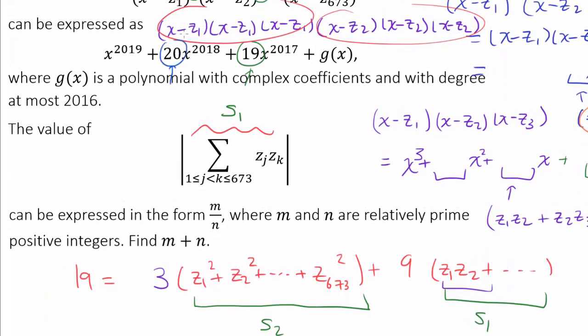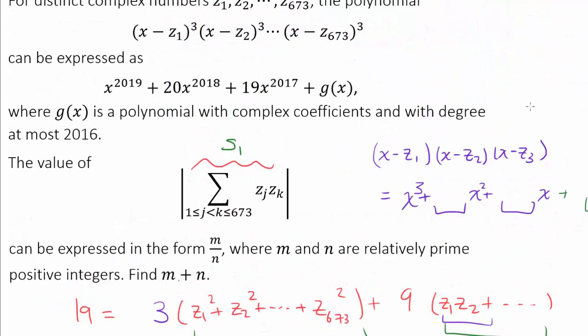So now that we understand 19, let's go to 20. What does 20 stand for? Well, as we can see from this example, the coefficient of the second highest degree term is going to be, so this part, is going to be negative z1 plus z2 plus z3. Because to get x squared, we're going to have negative z1 and multiply 2x, or negative z2 and multiply 2x, or finally, have negative z3 and multiply 2x. So the coefficient is going to be negative of the sum of the roots.